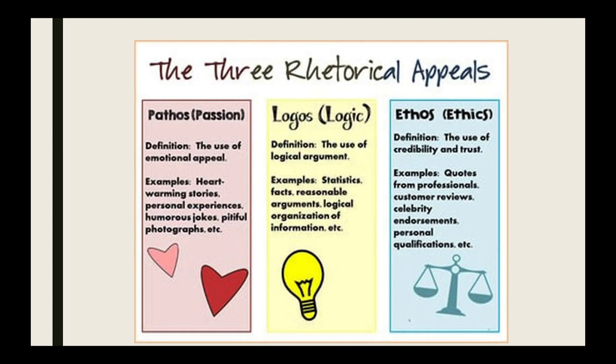So let's talk about the rhetorical appeals. I'm going to make a separate video on the rhetorical appeals — this is not going to do them justice, so look for the next video. The three rhetorical appeals are ways that people make arguments, ways that people use rhetoric to convey ideas and get someone to take on your point of view. The rhetorical appeals are ethos, pathos, and logos. Pathos is the use of emotions in your appeal — a heartwarming story, a personal experience, humorous jokes, pitiful photographs. Pathos is using emotional appeals to have someone take on your perspective or opinion on some matter.